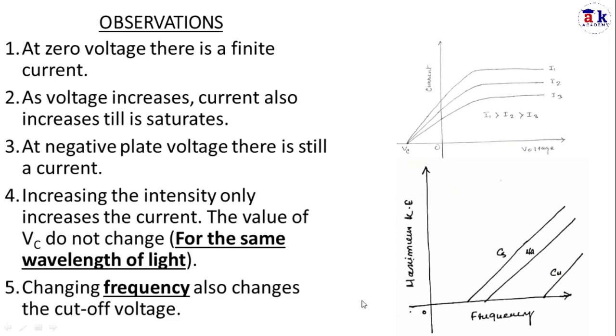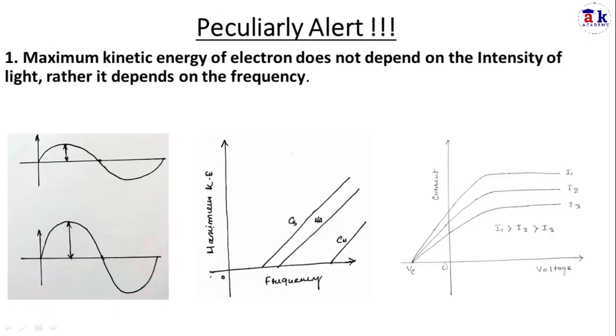The fifth observation is changing the frequency also changes the cutoff voltage. There is a particular frequency for which we are getting electrons. Before that we are not getting any current. The maximum kinetic energy varies linearly with frequency.